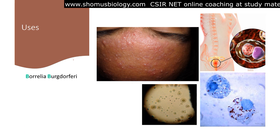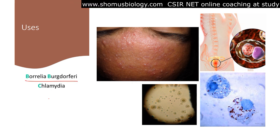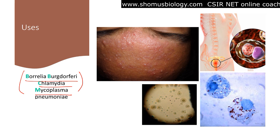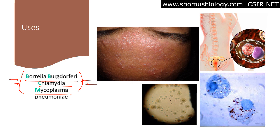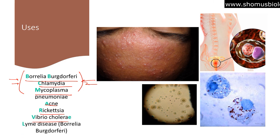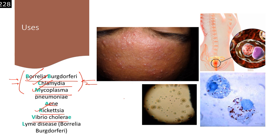The uses of tetracycline include: Borrelia burgdorferi infections (Lyme disease), Chlamydia infections, Mycoplasma infections, Rickettsia, and Vibrio cholerae. These are particularly important because common antibiotics cannot act against Chlamydia, Mycoplasma, and Rickettsia, making tetracycline the antibiotic of choice. It is also used for skin infections like acne, respiratory tract infections like pneumonia, and gastrointestinal infections like cholera.